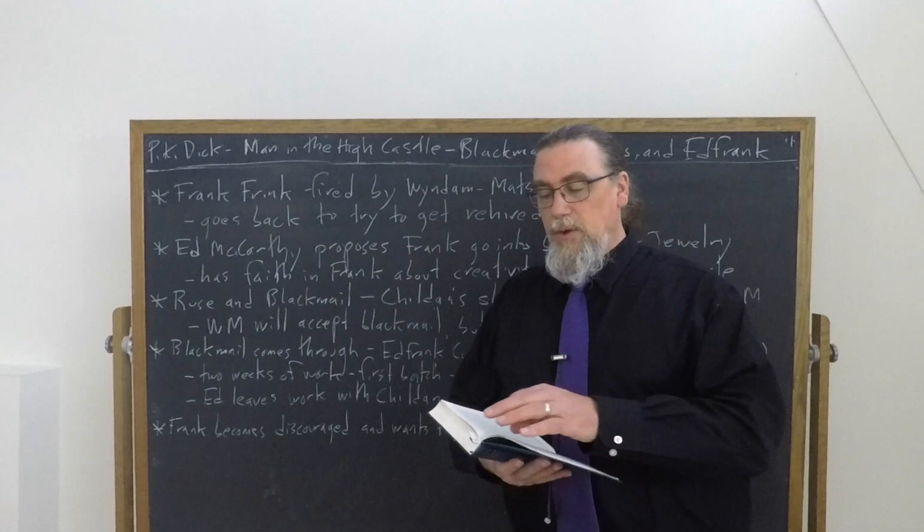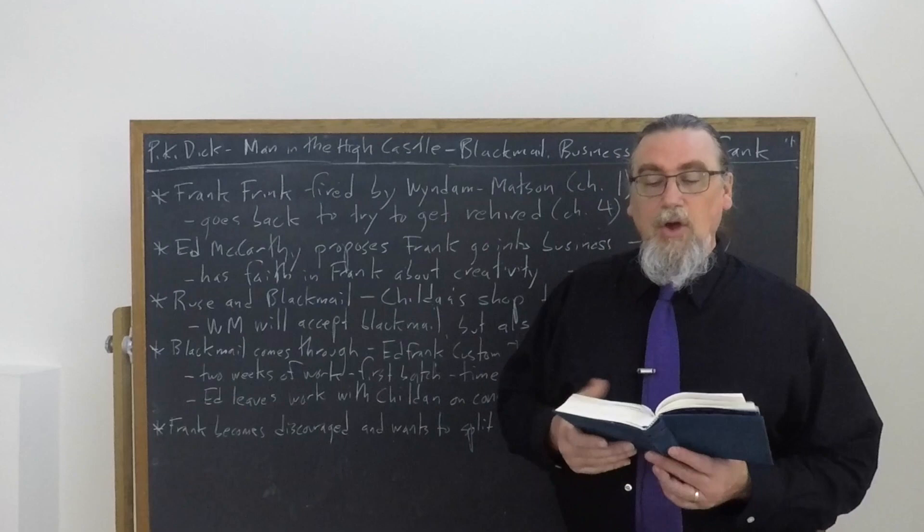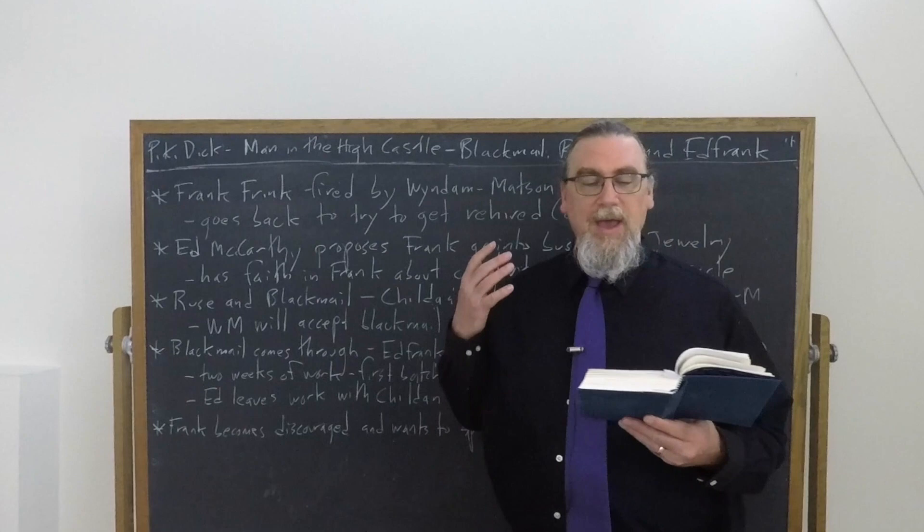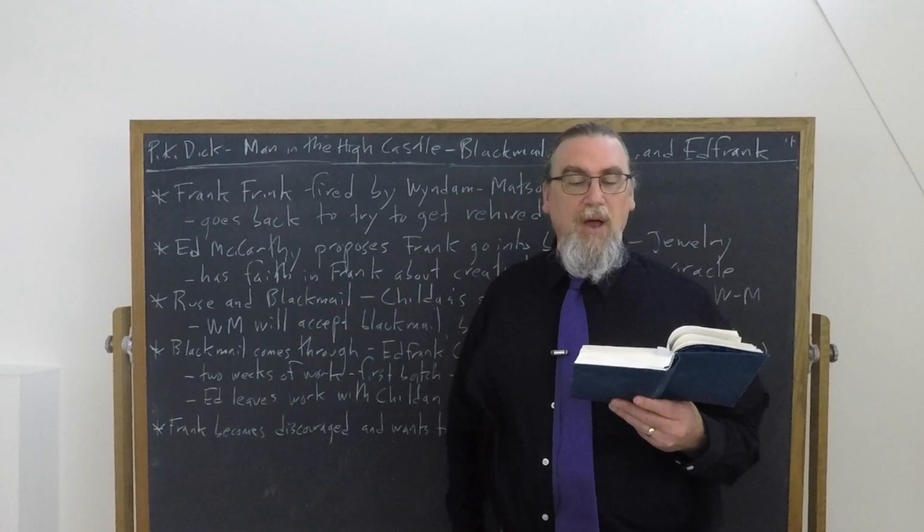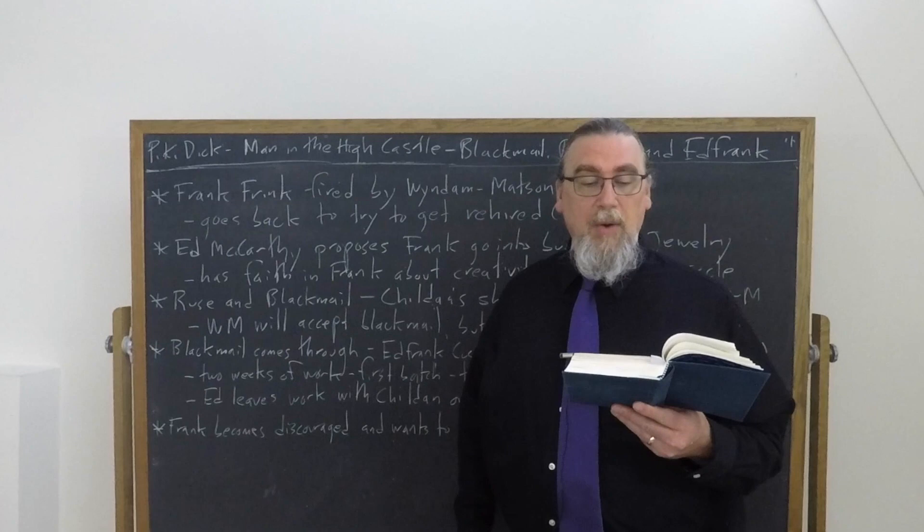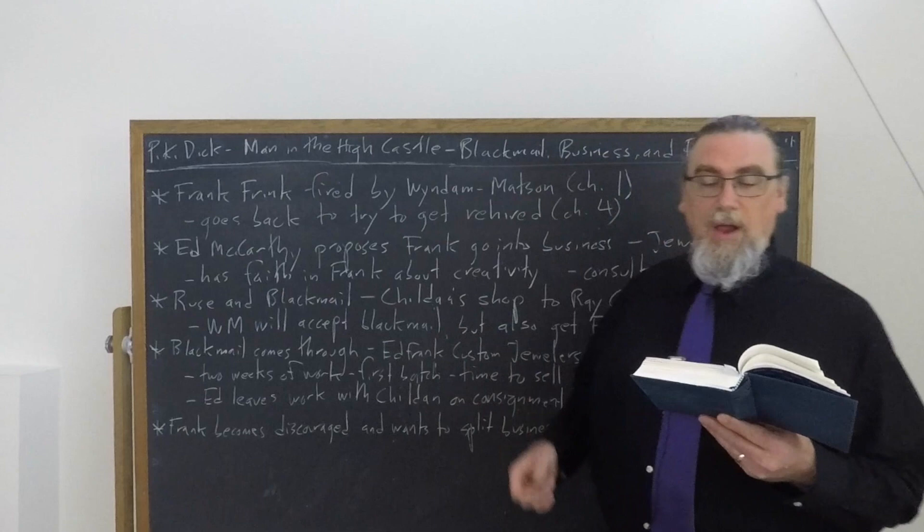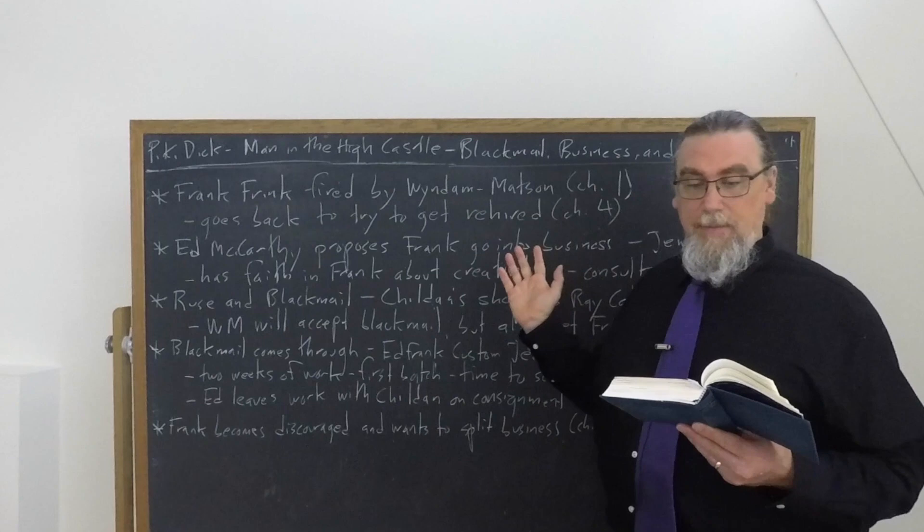A few chapters later in chapter four, we begin with Frank Frank going to his place of work, watching his ex-employer waddle down the corridor into the main work area of WM Corporation. He thought to himself, the strange thing about Wyndham Mattson, he doesn't look like a man who owns a factory. He looks like a tenderloin bum, a wino. But old WM was really very powerful.